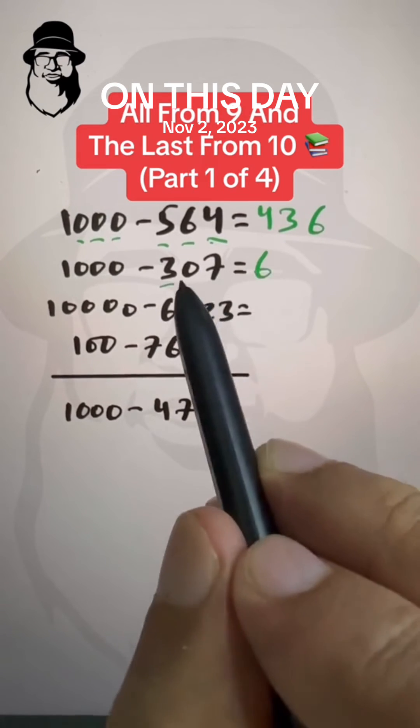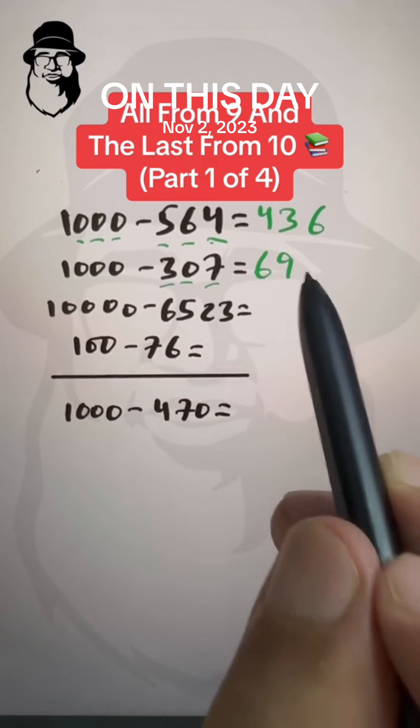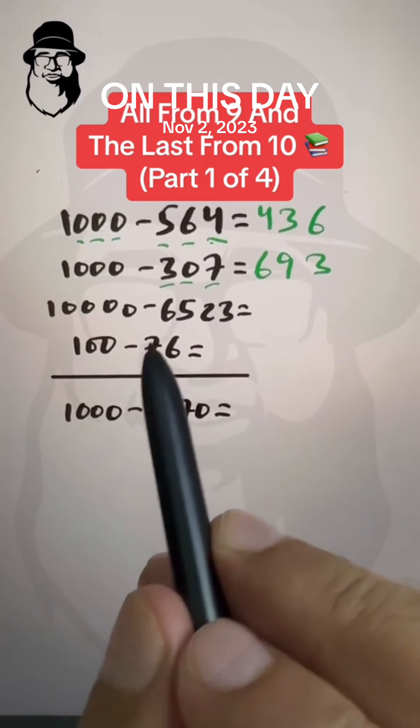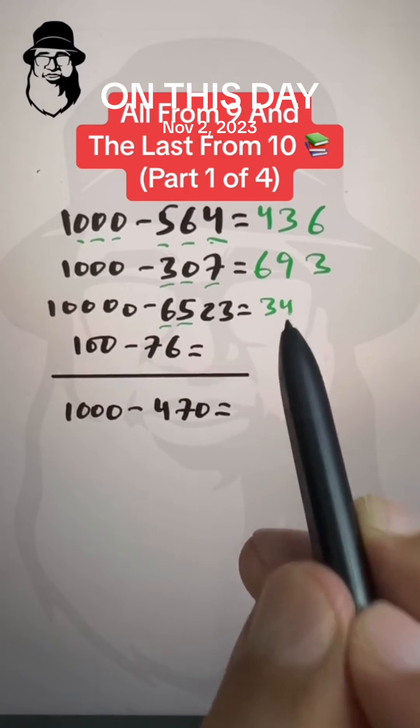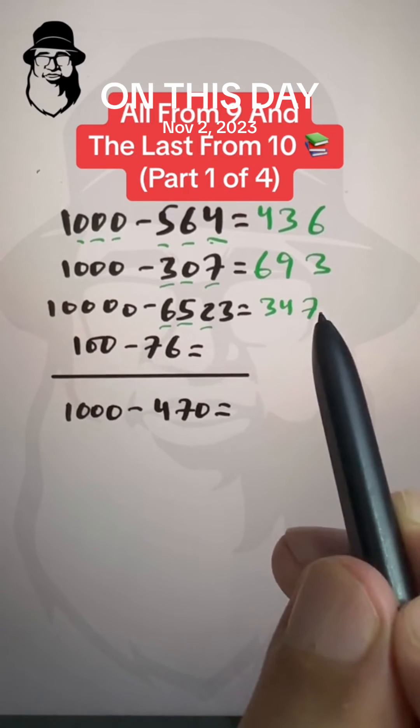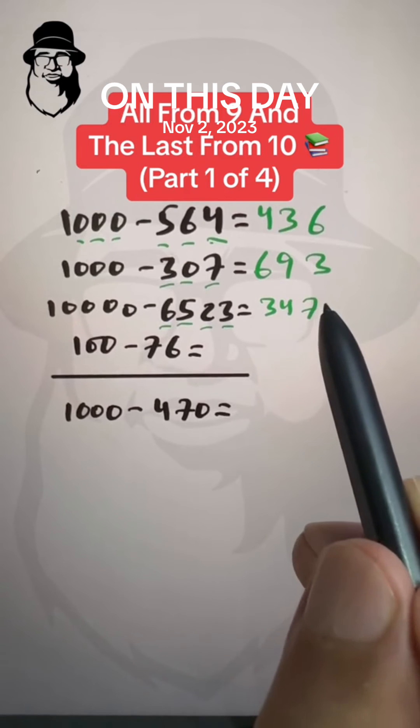3 from 9 is 6, 0 from 9 is 9, 7 from 10 is 3. And here, 6 from 9 is 3, 5 from 9 is 4, 2 from 9 is 7, and 3 from 10 is 7 also.